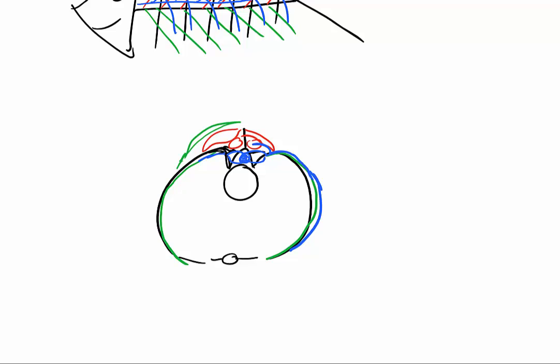So any muscle that we see being innervated by dorsal ramus nerves is an epaxial muscle.